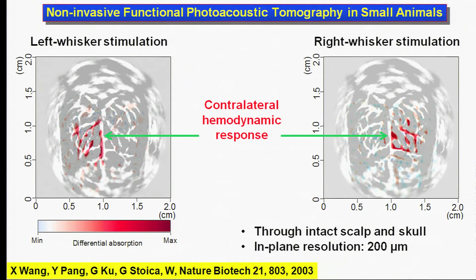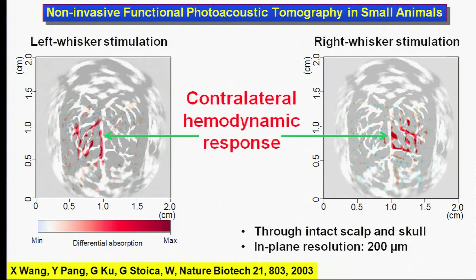First published in 2003, functional photoacoustic tomography imaged brain functions of rodents through an intact scalp. This pair of early images shows one-sided whisker movement hemodynamically activating the contralateral side of the brain. This unprecedented, non-invasive functional imaging launched our field into exponential growth.